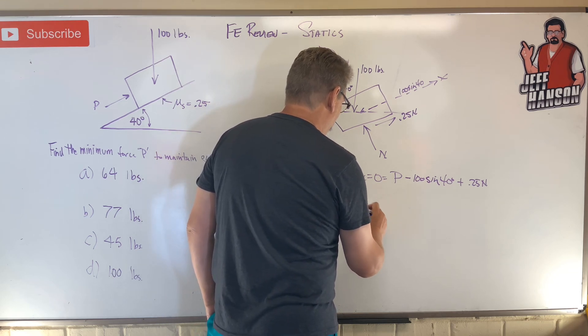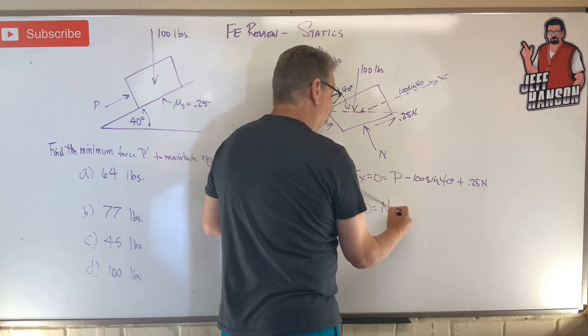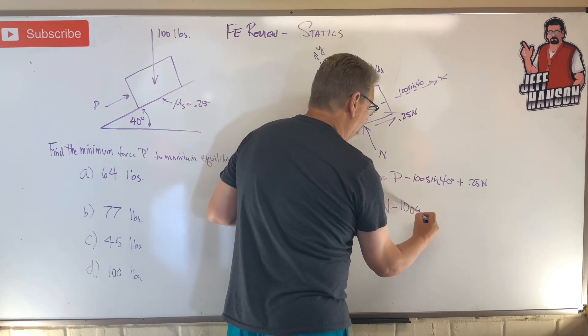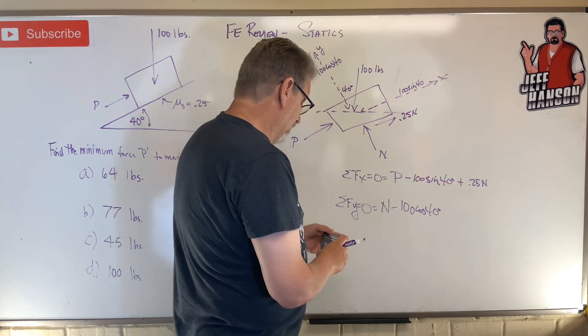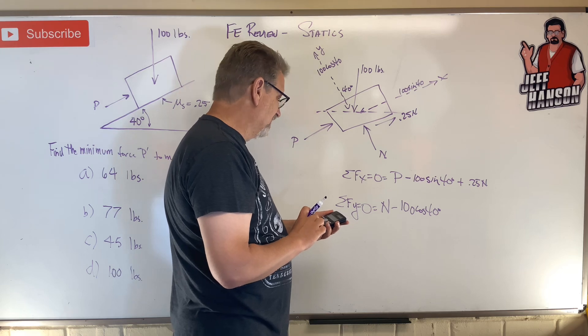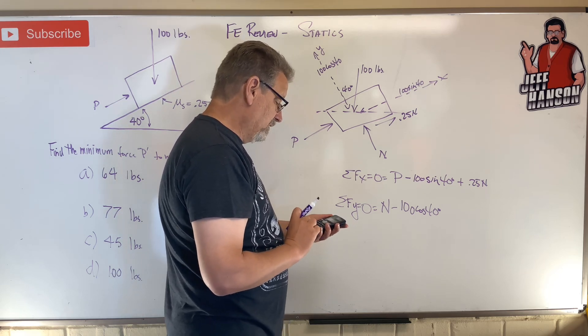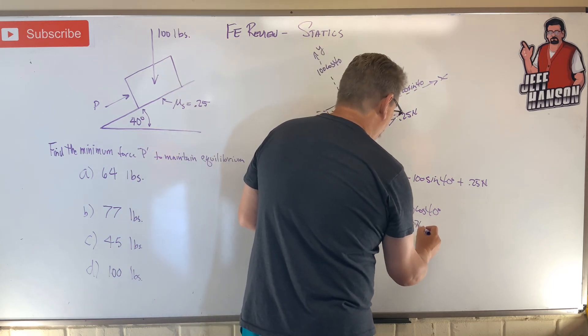All right. What about Y? In the Y direction, I've got N going uphill. And I've got that going downhill, minus 100 cos 40. And let's see, handy dandy calculator. 100 times the cosine of 40, 76.6.